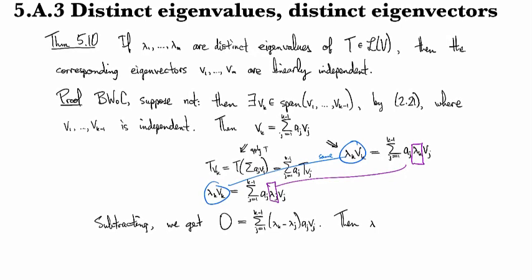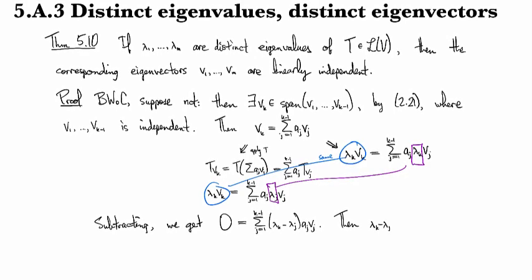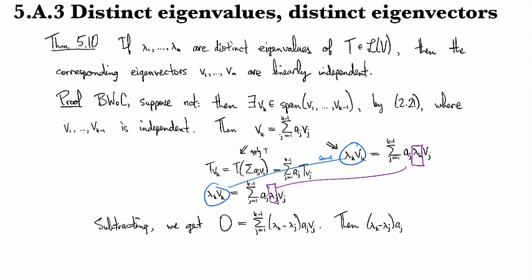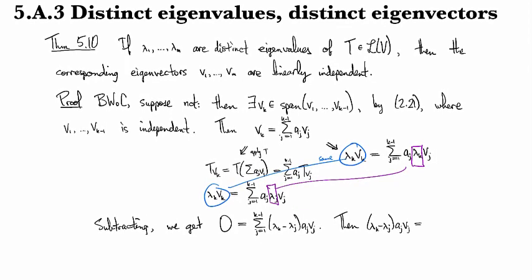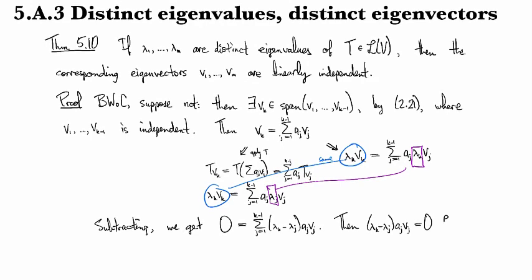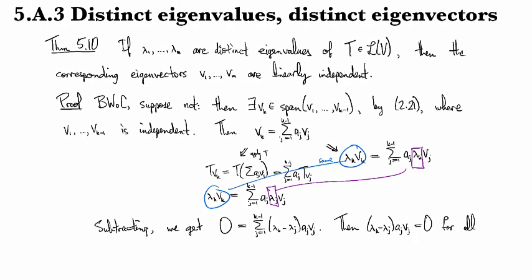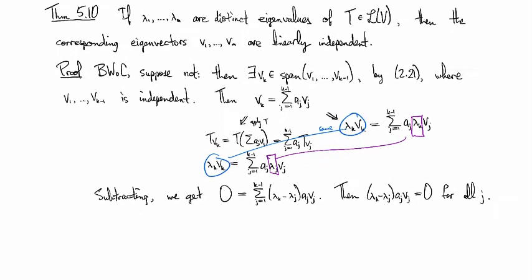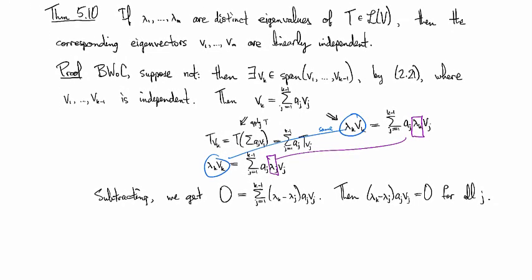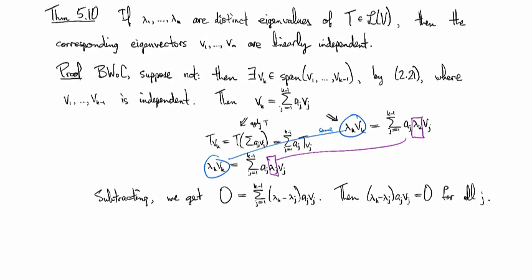And so now you notice this is a linear combination of the v_1 through v_k, which we have chosen so that they are independent. So then we know that all these coefficients have to be equal to zero.